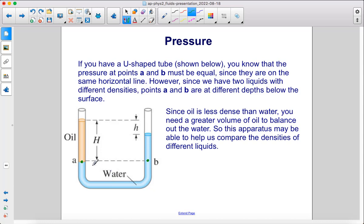However, since we have two liquids with different densities, we have water here and oil there, points A and B are at different depths below the surface. See, here we only have that much depth. Over here, we have that much. Since oil is less dense than water, you need a greater volume of oil to balance out the water. So this apparatus may be able to help us compare densities of different liquids.